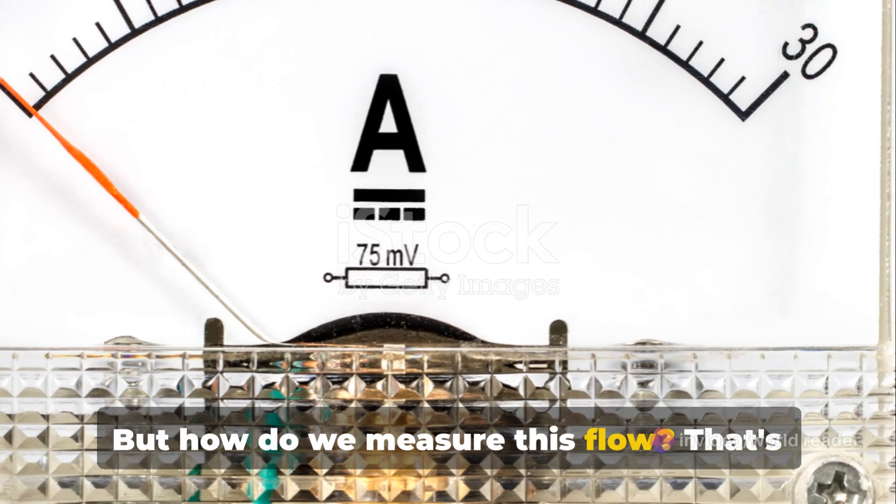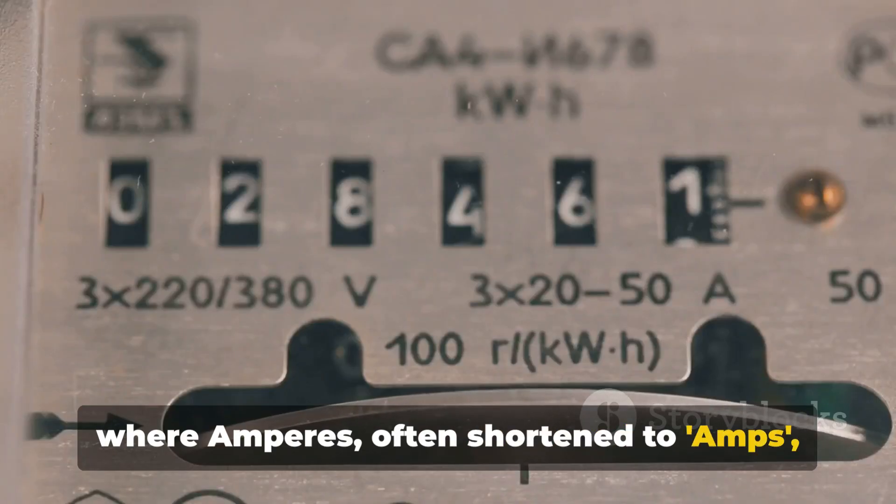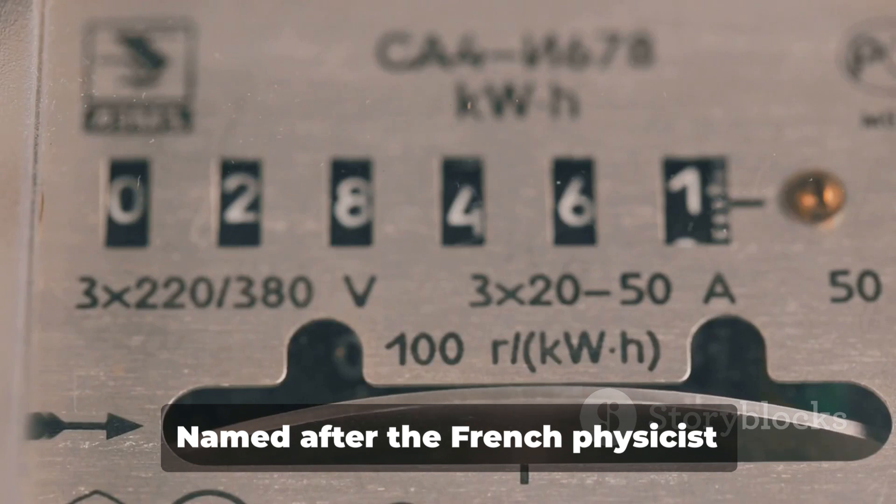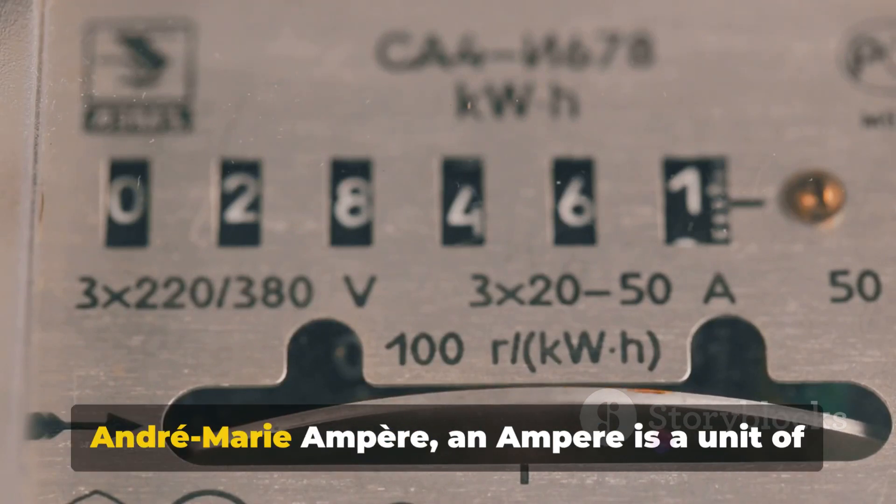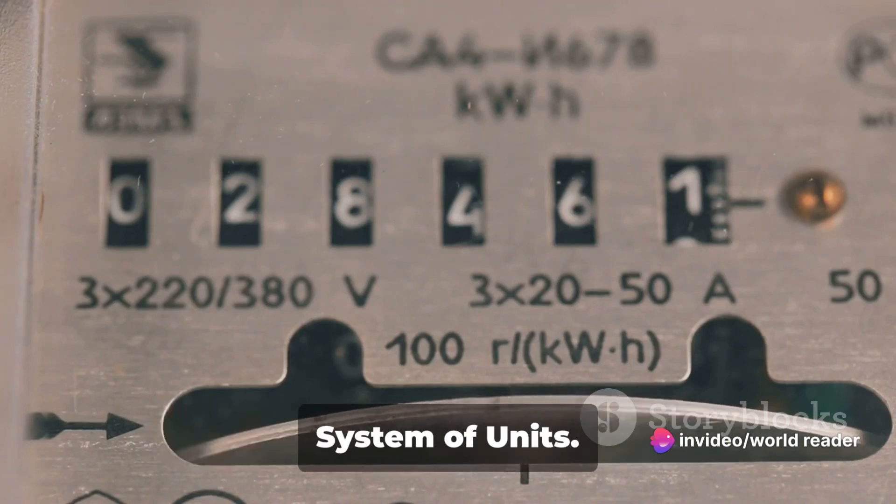But how do we measure this flow? That's where ampere, often shortened to amps, come into the picture. Named after the French physicist Andre Marie Ampere, an ampere is a unit of electric current in the international system of units.